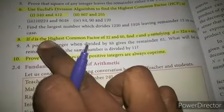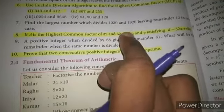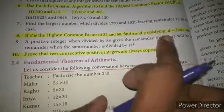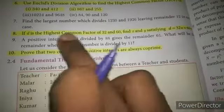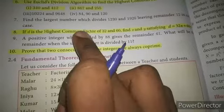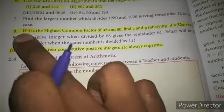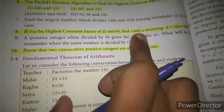If D is the highest common factor of 32 and 60, find X and Y satisfying D equals 32X plus 60Y. So we need to find the HCF of 32 and 60, then use those values to find X and Y.